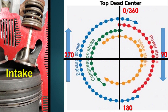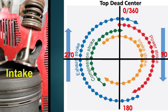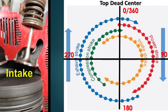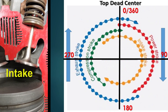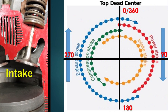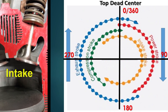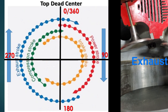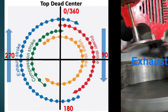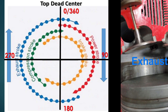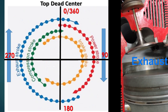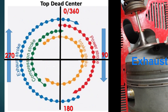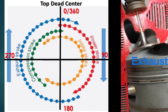The intake valve, which is shown in yellow on the valve timing chart, is opened just before the piston reaches top dead center. The exhaust valve, which is shown in blue, remains open after top dead center.